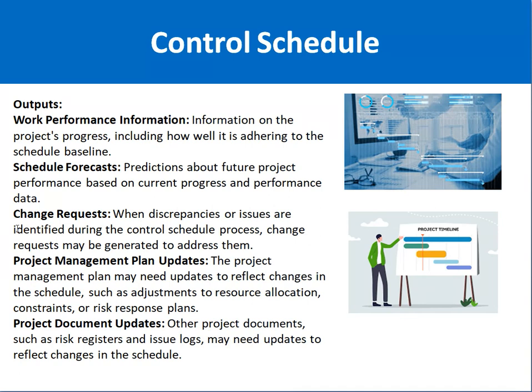The outputs of the Control Schedule process begin with Performance Information — information about project progress, including how well the project is adhering to the schedule baseline. This is very important to determine whether the project is on schedule. Schedule Forecast is another output: based on current progress, you can predict how much time is required to complete the project. Change Requests may also be generated if discrepancies or issues are identified.